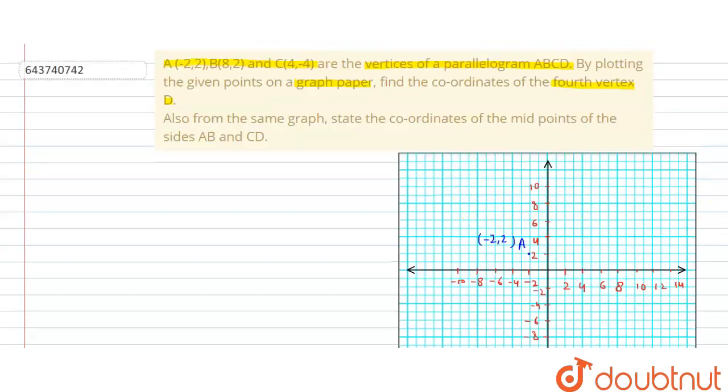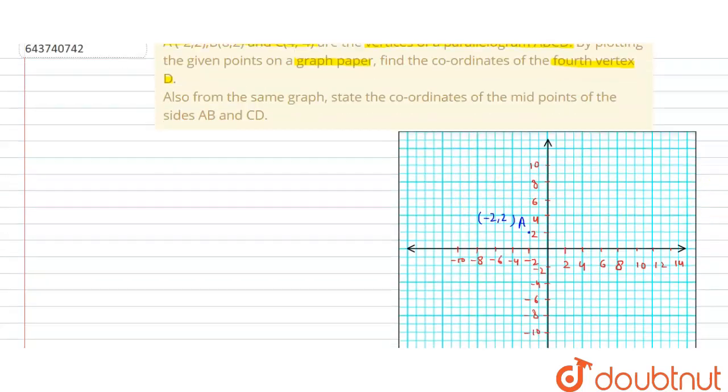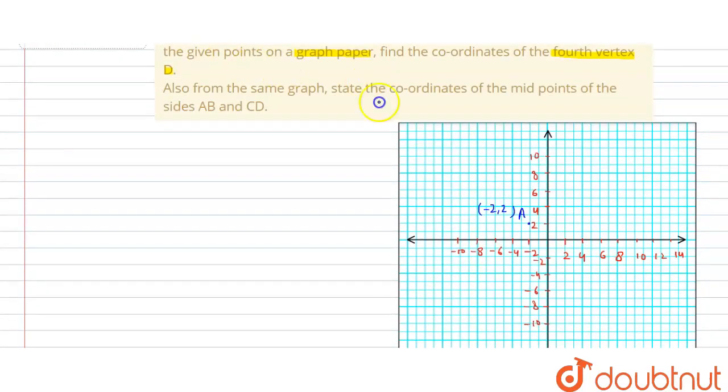Then point B is (8, 2), so X is eight and Y is two. X is eight here and Y is two here, so this is our B point at (8, 2).